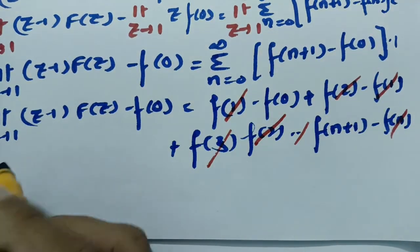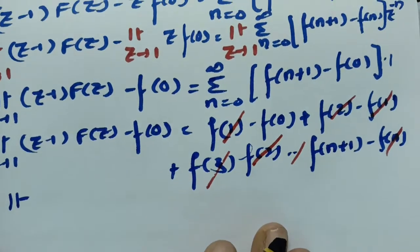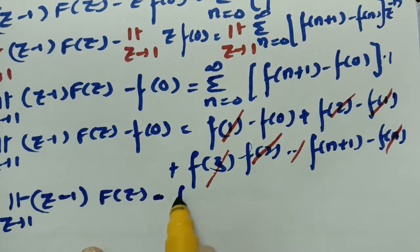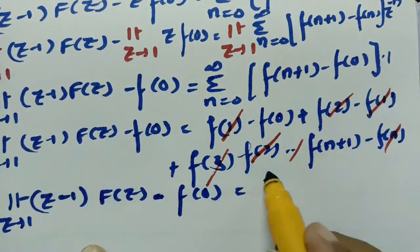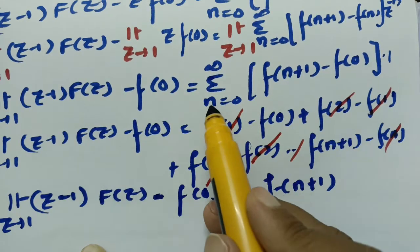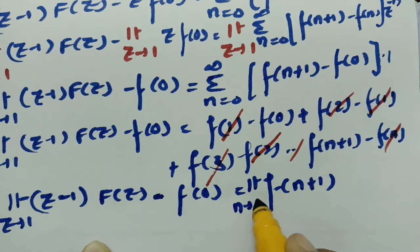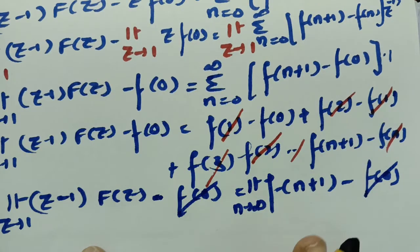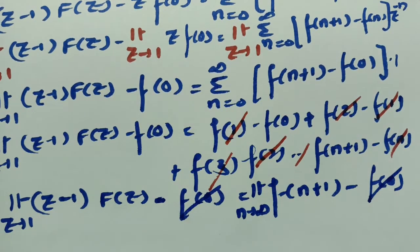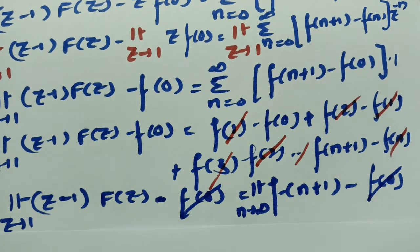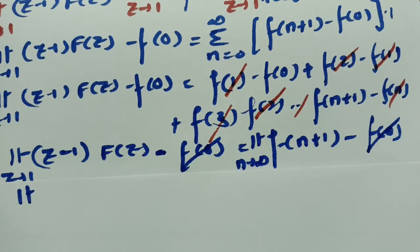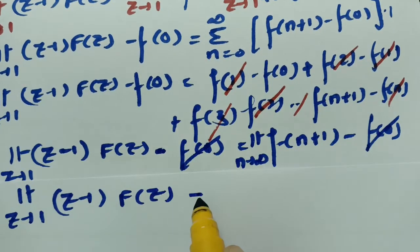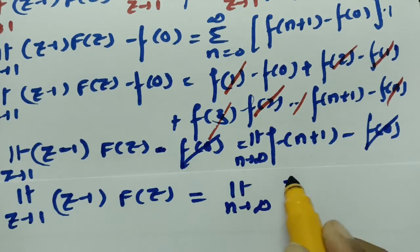What remains is: limit z tends to 1 of (z minus 1) into capital F(z) minus f(0) equals the limit as n tends to infinity of f(n+1) minus f(0). Cancelling f(0) from both sides, we get limit z tends to 1 of (z minus 1) into capital F(z) equals limit n tends to infinity of f(n+1).